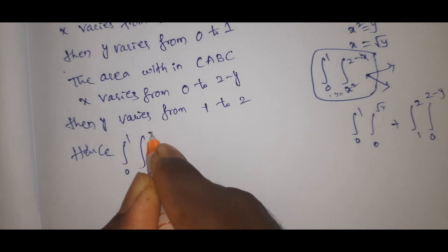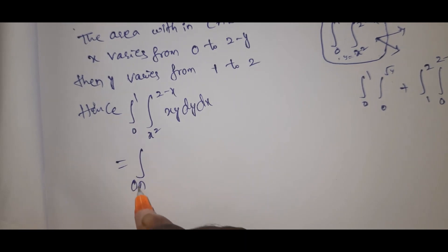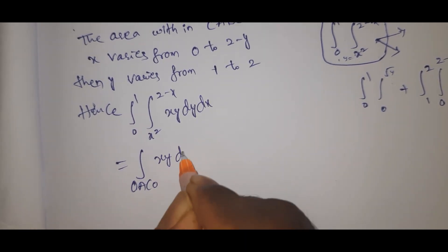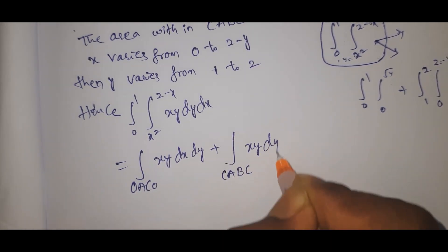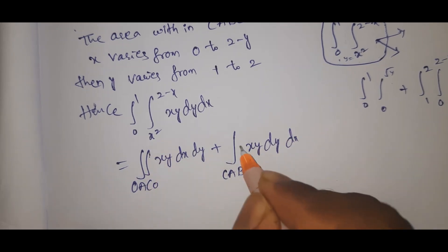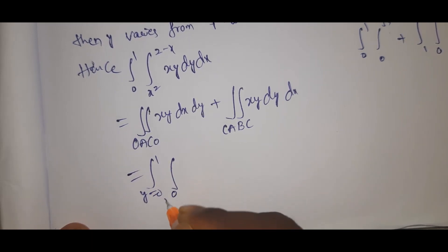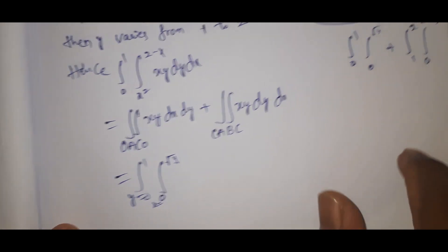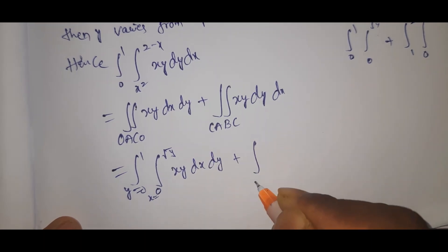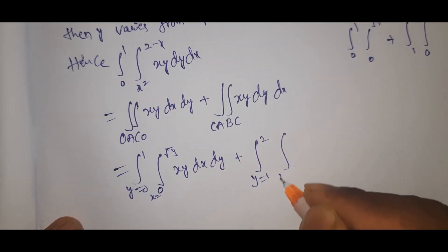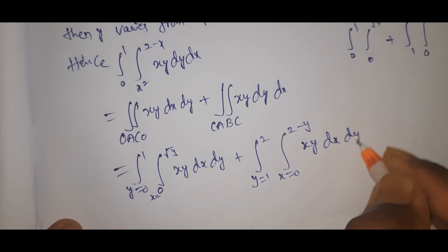So the integral from 0 to 1, x² to 2−x of xy dy dx equals the integral over OACO of xy dx dy plus the integral over CABC of xy dy dx. That equals: integral y=0 to 1, x=0 to √y of xy dx dy, plus integral y=1 to 2, x=0 to 2−y of xy dx dy.